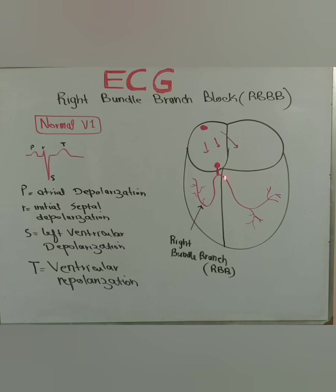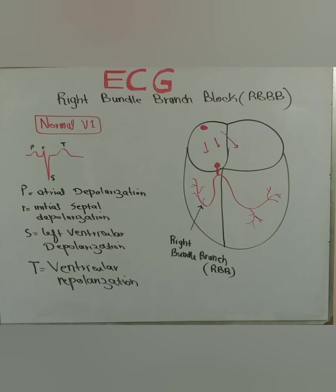This causes depolarization of the septum. The wave of depolarization of the septum travels towards V1 and V2, and away from V5 and V6. Because this septal depolarization is traveling towards V1 and V2, it generates an R wave. Because the septal mass is quite small, it makes only a very small positively deflected R wave in leads V1 and V2.